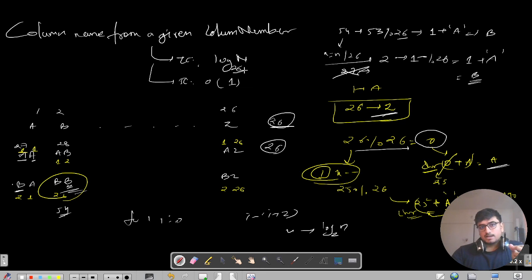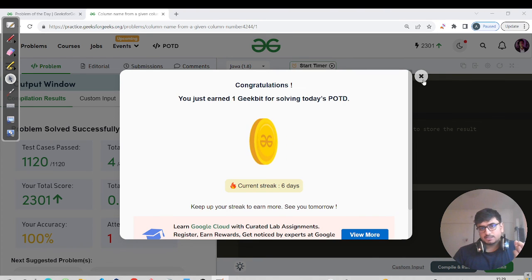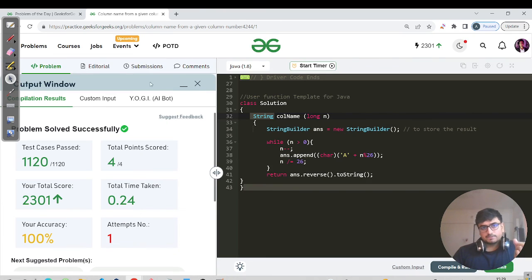The base would be decided by the number which we are decreasing or increasing. Here we are dividing it by 26 in each and every iteration, so it would be log n base 26 time complexity. We are not using any space, so it would be O of 1. Great, we have done this question.